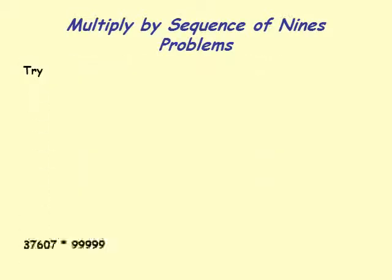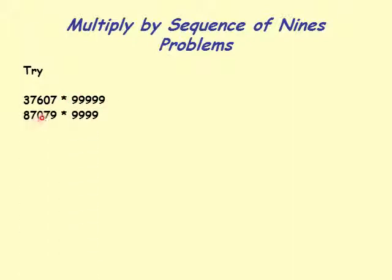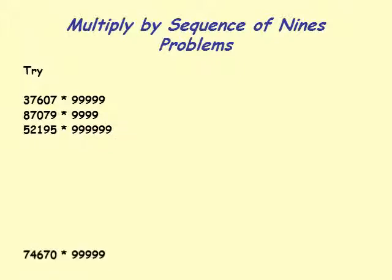Practice problems: try 37607 times a sequence of five 9's; 8707 times a sequence of four 9's; and 52195 times a sequence of six 9's.